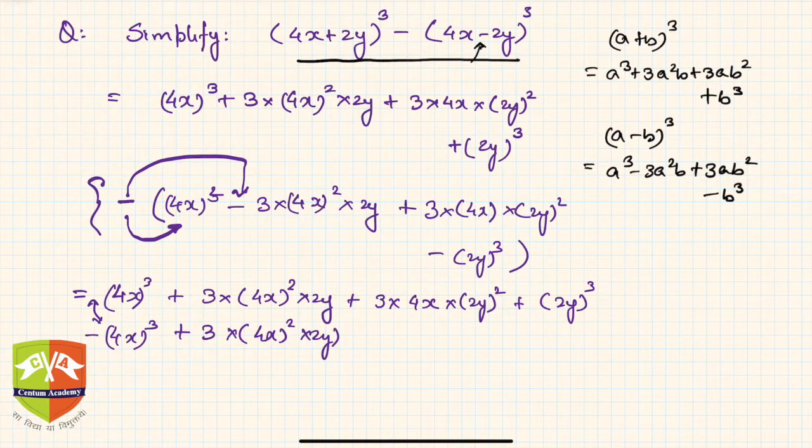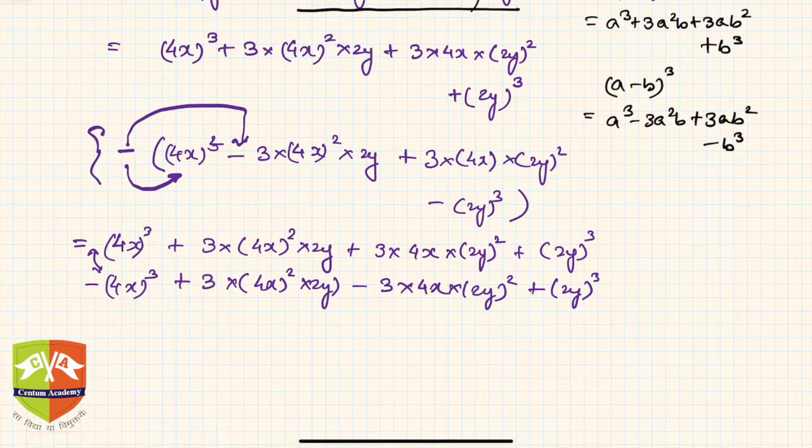Then finally minus 3 into 4x into (2y)² and then plus (2y)³. So simple mathematics. If you see this and this term will go, similarly this and this term will go.